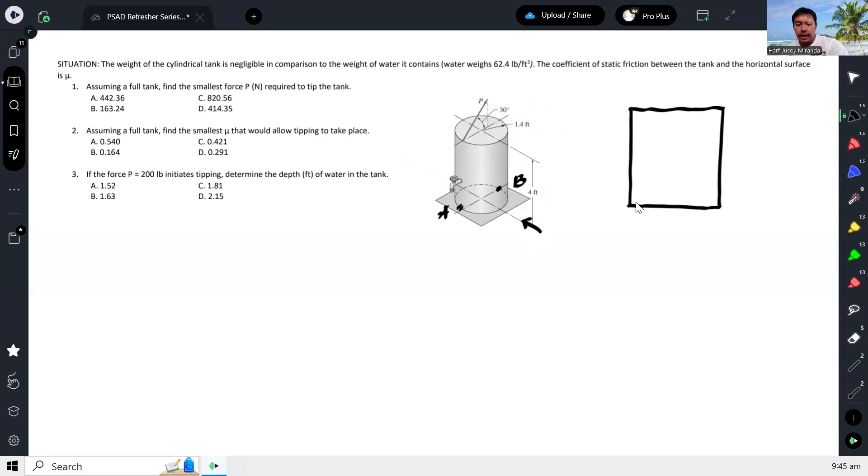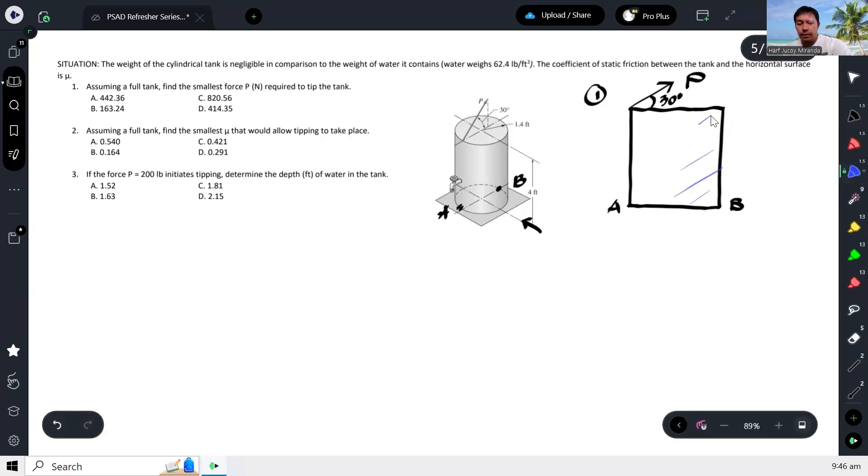So pag tumingin tayo sa direction na to, may kita natin is ganito lang siya. And then meron ditong force P ng angle ay 30 degrees. This is point A, this is point B. And then full tank daw sa number one. Full tank, so ibig sabihin this is full of water. So ibig sabihin we will have here the weight of water, so tawagin natin W.